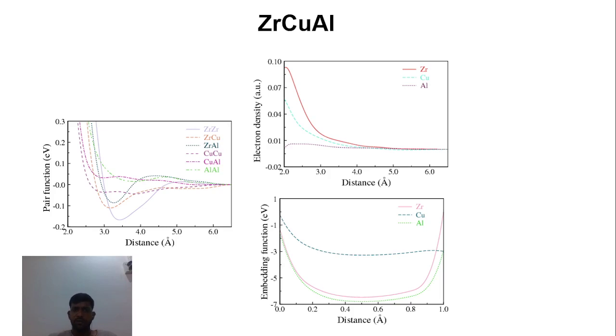For another type of system with different types of metal atoms, there are multiple functions including pairwise functions, electron density functions, and embedding functions.